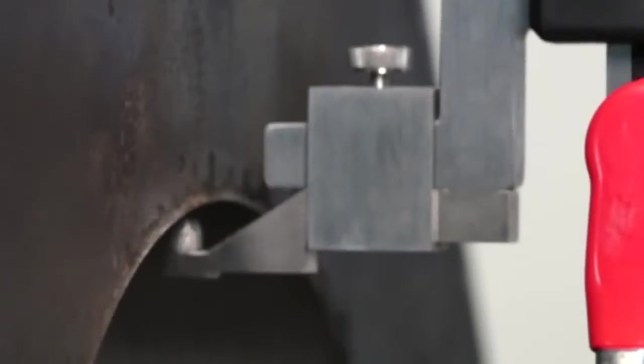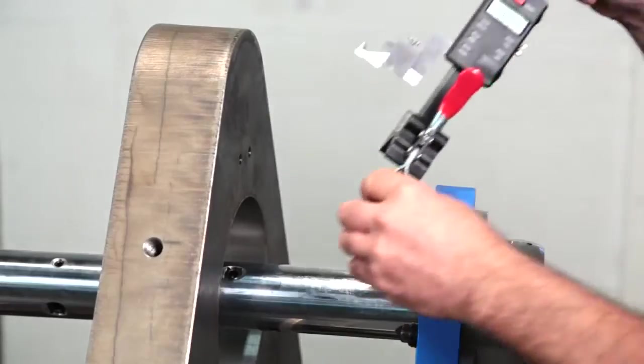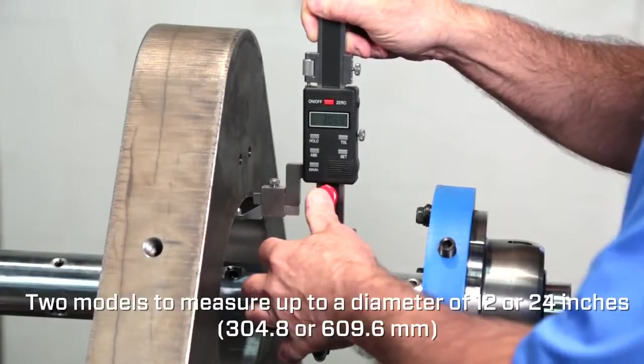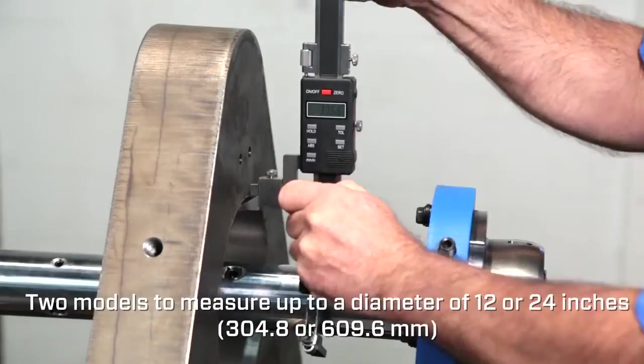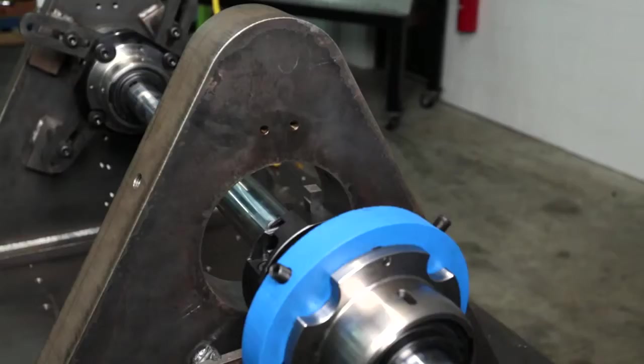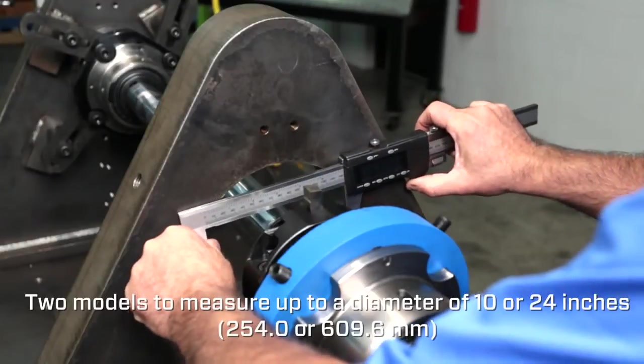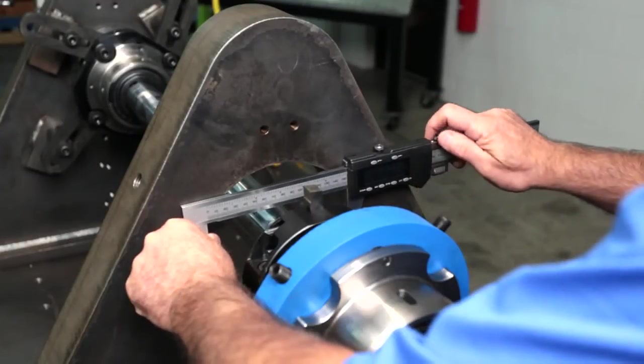For a quick and easy way to measure the bore diameter and tool height without removing the bar, Climax offers a bore measuring tool, which can measure the tool height and bore diameter up to 24 inches, and a digital bore measuring caliper that can measure a diameter up to 24 inches.